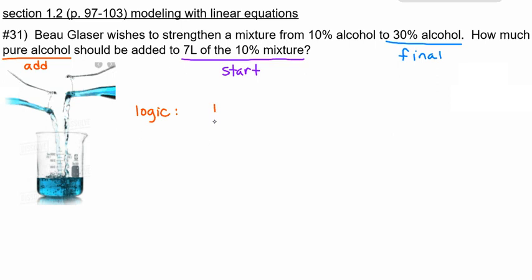So if I'm starting with a 10% alcohol mixture, and I'm combining that with a 100% alcohol mixture, and my goal is to end up with a 30% alcohol mixture, what I notice with this little visual is that my final mixture is much closer to the 10% side than it is to the 100% side.